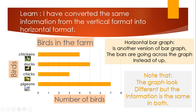We have: pigeons = 7, so the bar goes across seven units. Chicks = 3, bar going across three units. Ducks = 5, bar going across five units. This is a horizontal bar — going across. A vertical bar goes from bottom going up, up and down. That is vertical. But here we start from the left and go across — that is horizontal.